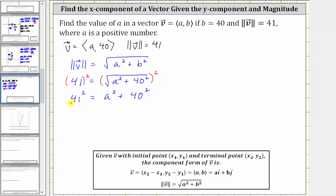And now let's evaluate 41 squared and 40 squared. 41 squared is equal to 1681, which is equal to a squared plus 40 squared, which is equal to 1600.